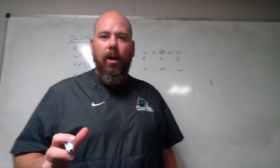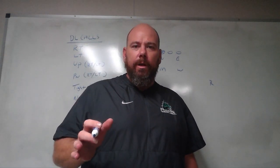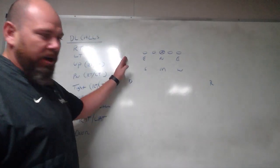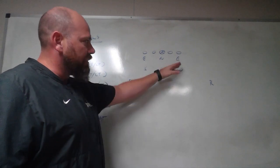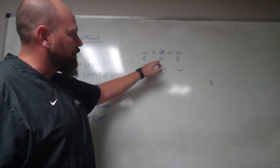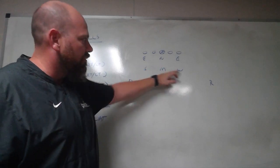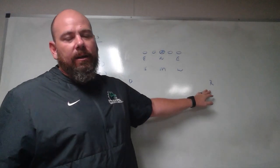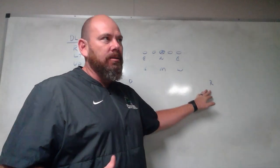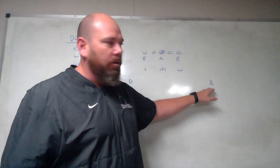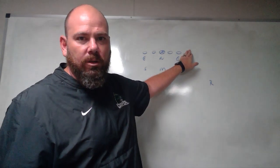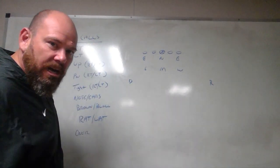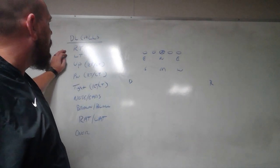We're going to talk about fronts and blitzes and how they correlate with one another. Our basic front has three defensive linemen — zero technique, two and four techniques — sitting around four to five yards. We like our Mike to sit a little deeper; Rover and Dog depending on coverage. With sky coverage they're sitting ten yards, or walked up on the line of scrimmage with a tight end.